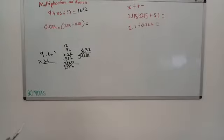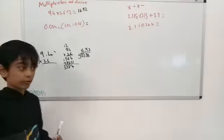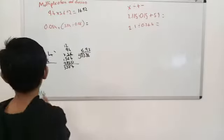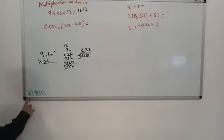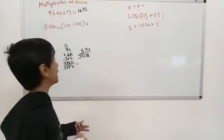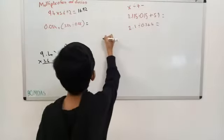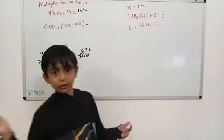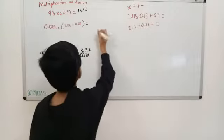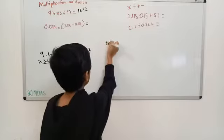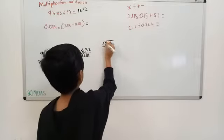0.04 times bracket 3.84 divided by 0.06 closing brackets. We have to do the brackets first, of course, because if we don't, you're not following BOMDAS. First, let's start with the brackets as I said. Let's use the normal rule: multiply this by 100 and multiply this by 100, so 384 divided by 6.